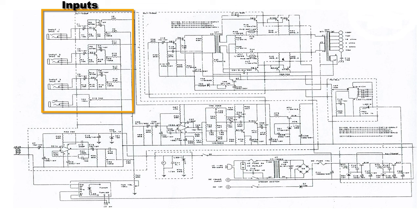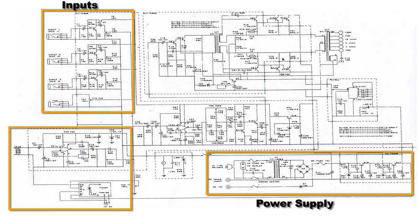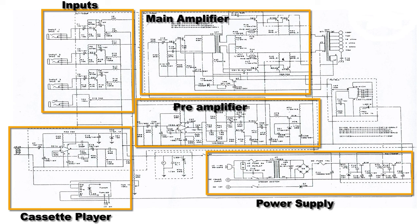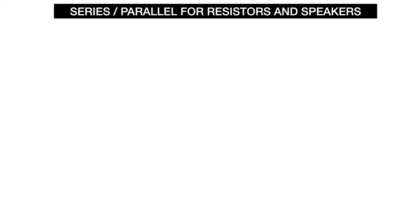This is the schematic of this particular amplifier. Here you can see the inputs; down here is the power supply. Here is the cassette player circuit. In the middle is the preamplifier — the input board has mixing and preamplification. Up here is the main amplifier with a bunch of transistors, and right here is the transformer. This part below the transformer I'm not sure about — the schematic isn't very clear.